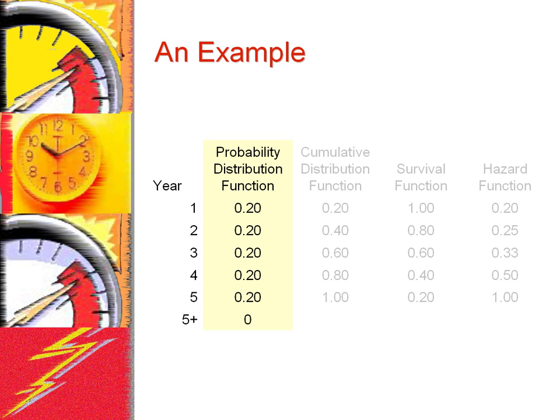Under the assumption of equal yearly probability, the probability of failure occurring in any one year is 1 divided by 5, or 0.20. Given this distribution, we want to understand what is the probability that if the prosthesis has not failed for two years, it will fail in the third year — or more broadly, what is the hazard function associated with each of the years?